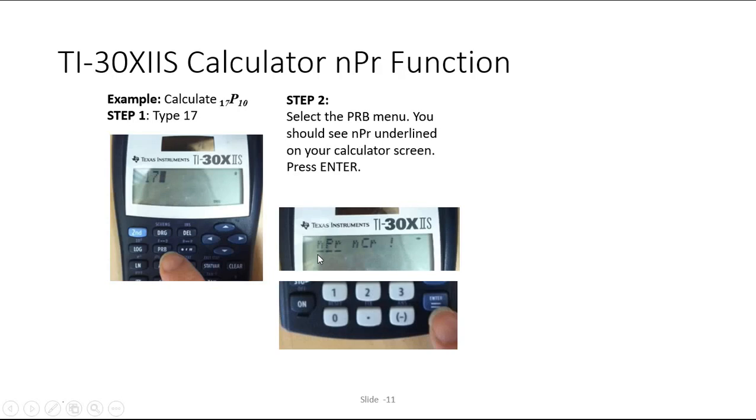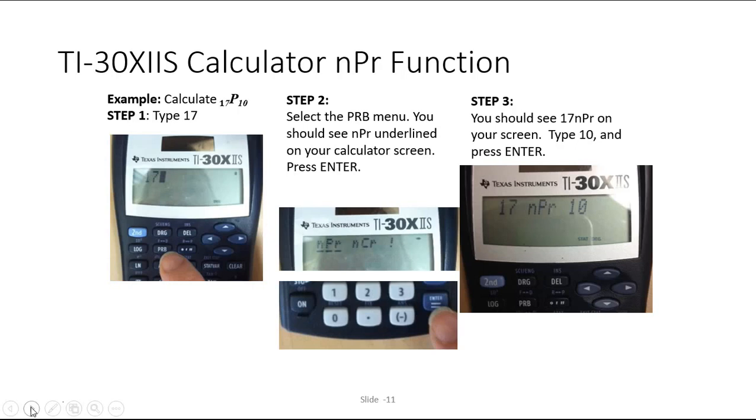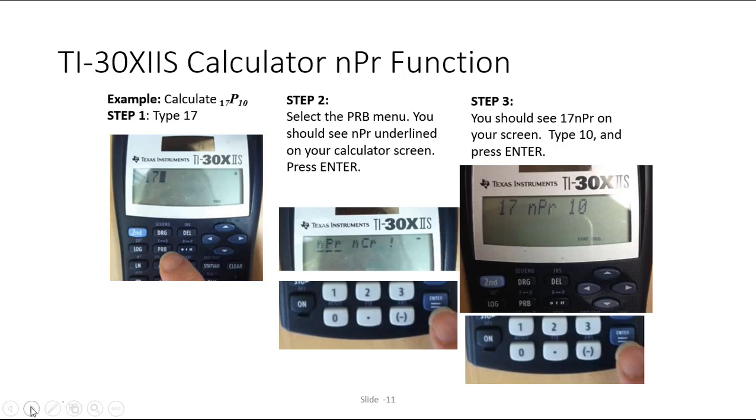There are actually three functions on this screen, NPR, NCR, and factorial. But we're doing NPR. So since it's already underlined, you would just hit equals. And then what you should see on your screen is the 17 NPR. And then you would type 10, and then you would hit enter.